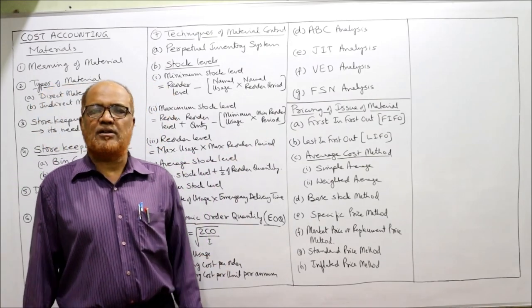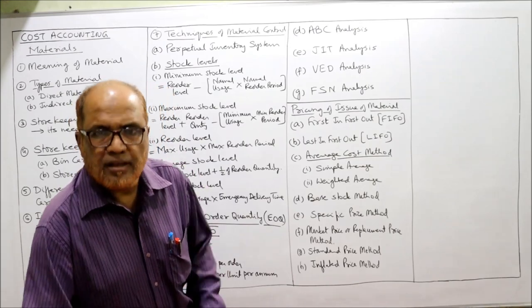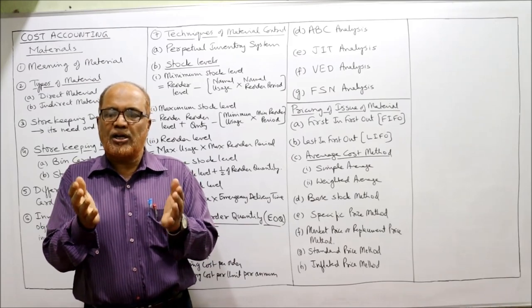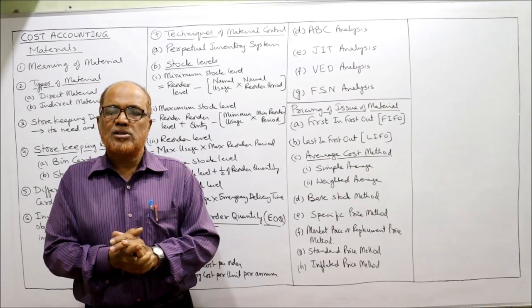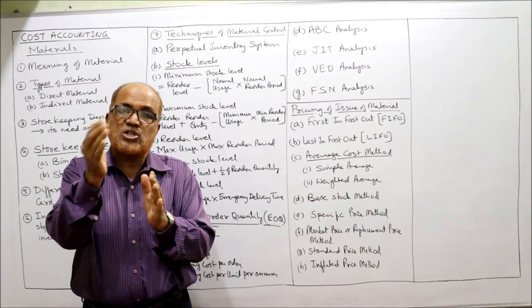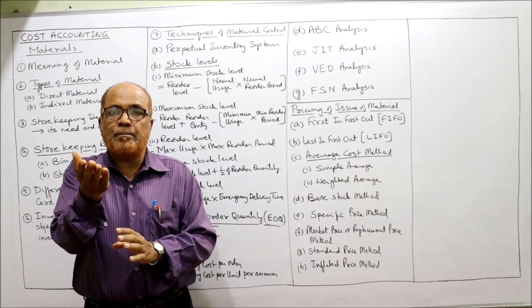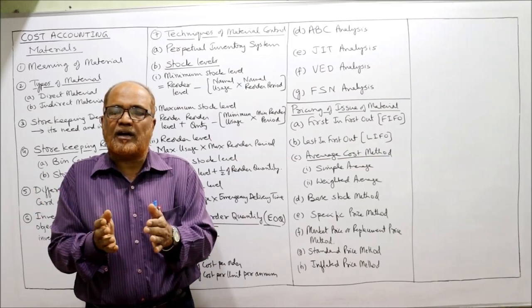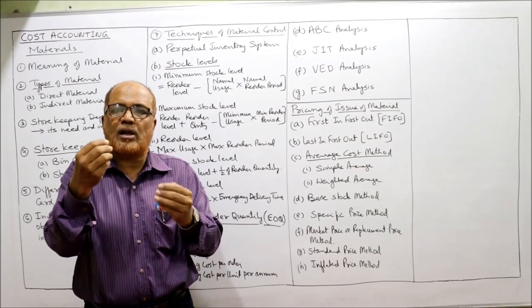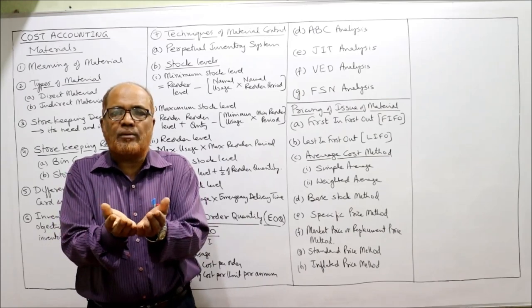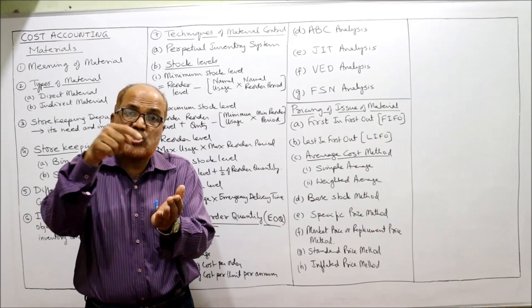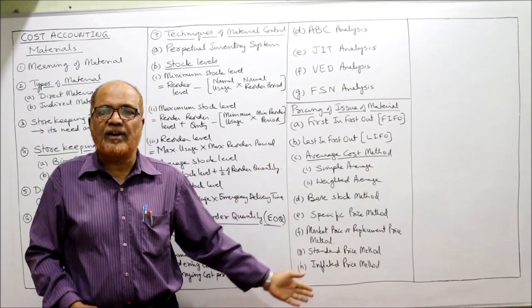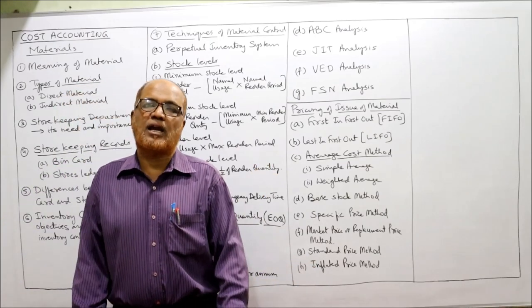Market price or replacement price method charges material at the current market replacement price. Standard price method: management fixes a standard price, and material is charged at that standard price regardless of actual purchase price. Inflated price method: when some material is lost due to storage or spoilage, the loss is charged to the remaining good material, inflating the price. For example, if 100 kilograms are purchased but 2 kilograms are lost, the cost of 2 kilograms is spread over the remaining 98 kilograms, inflating the unit price. This completes the full theory of the material chapter.